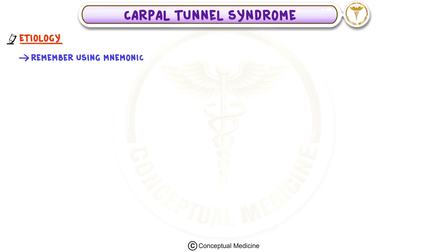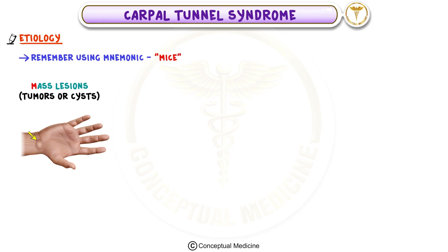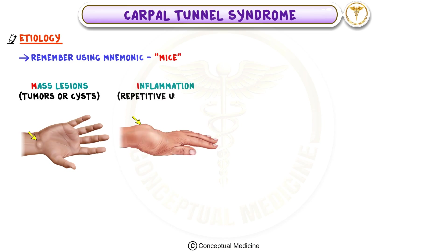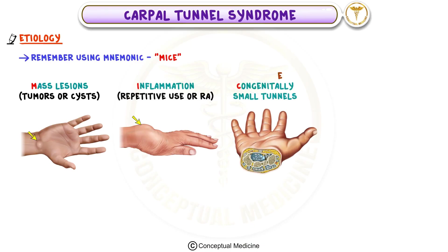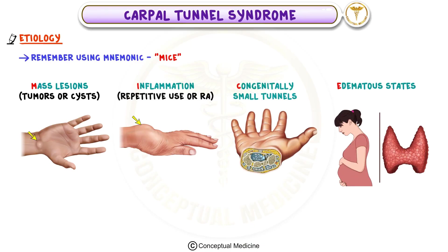This can happen due to various reasons, which we can remember using the mnemonic M-I-C-E: mass lesions like tumors or cysts, inflammation caused by repetitive use or conditions like rheumatoid arthritis, congenitally small tunnels, and edematous states like pregnancy or hypothyroidism. These factors make the tunnel tighter, compressing the nerve.